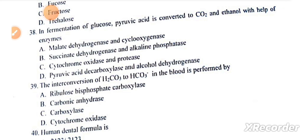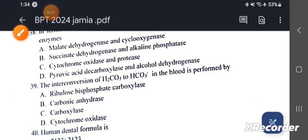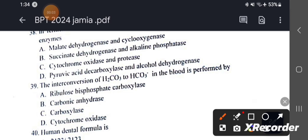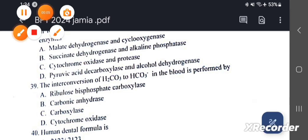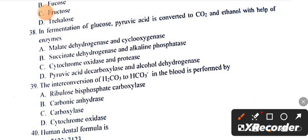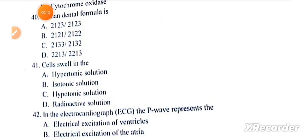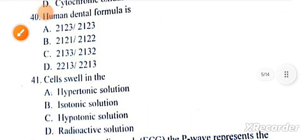This conversion uses the enzymes pyruvate decarboxylase and alcohol dehydrogenase. Interconversion of HCO3- in the blood is performed by carbonic anhydrase. Question number 40: Human dental formula is 2-1-2-3/2-1-2-3.